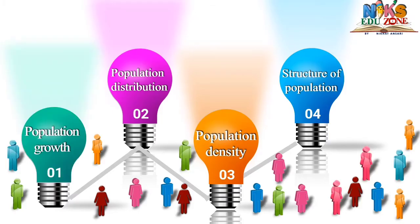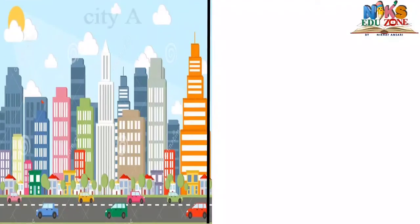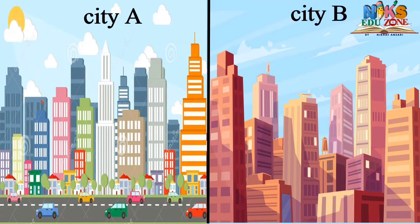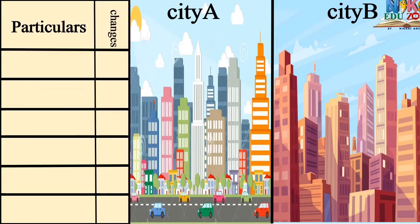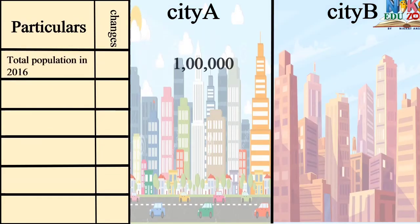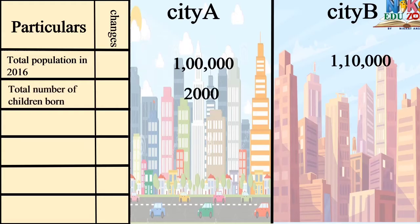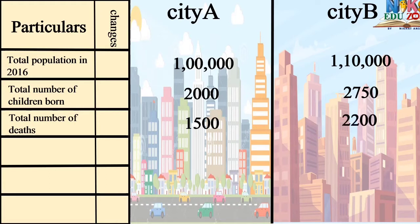Let's learn about population growth through an activity. In the year 2016, City A and City B had total populations of 1 lakh and 1 lakh 10,000 respectively. 2,000 children were born in City A and 2,750 in City B. Total deaths in City A were 1,500 and 2,200 people died in City B. 23,000 people migrated into City A from outside.